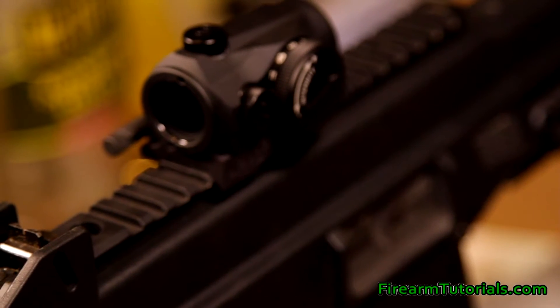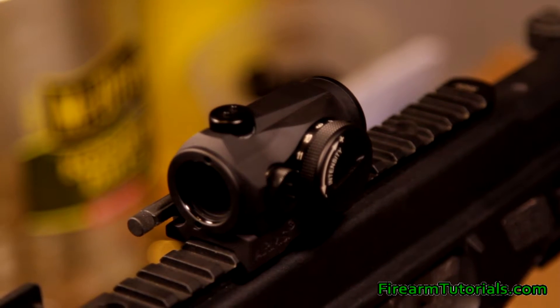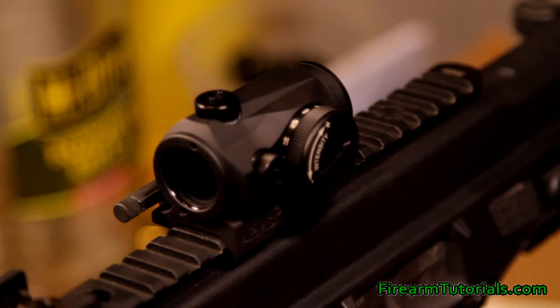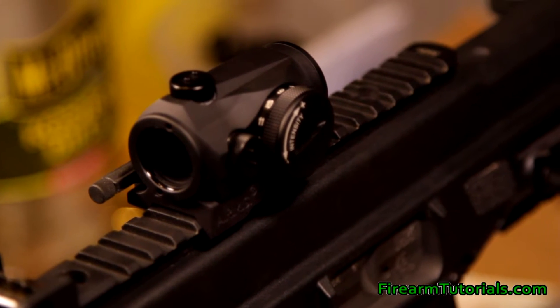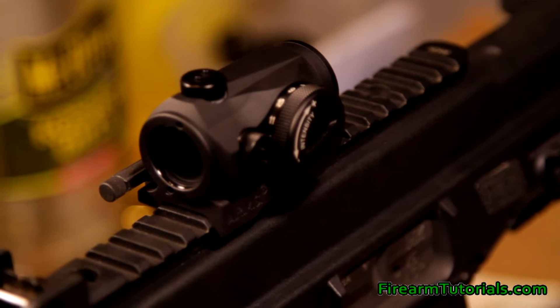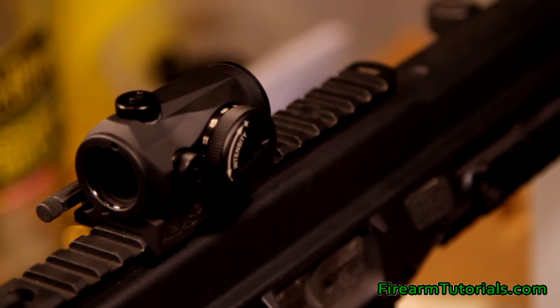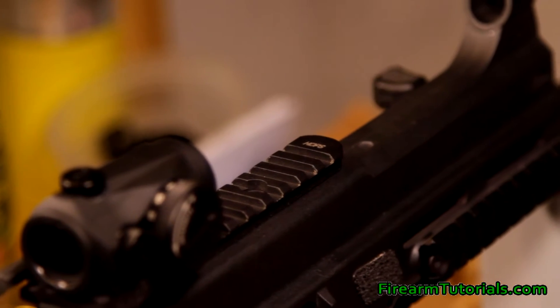Now this Aimpoint Micro H1 I have on here has an Arms mount, which is not my favorite, but it's what I had. You see that basically puts the optic in the lowest position it can be on the rail. Now if you look at the rest of the gun, you'll see that the rail is raised a little bit off the top of the gun.